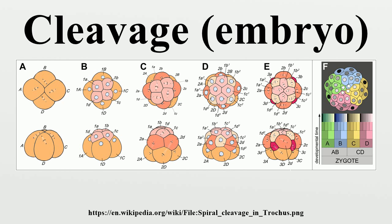Types of cleavage — Determinate: Determinate cleavage is found in most protostomes. It results in the developmental fate of the cells being set early in embryo development; each blastomere produced by early embryonic cleavage does not have the capacity to develop into a complete embryo. Indeterminate: A cell can only be indeterminate if it has a complete set of undisturbed animal-vegetal cytoplasmic architectural features. It is characteristic of deuterostomes. When the original cell in a deuterostome embryo divides, the two resulting cells can be separated, and each one can individually develop into a whole organism.